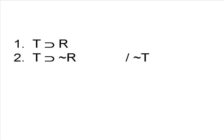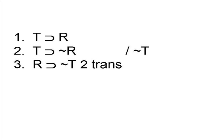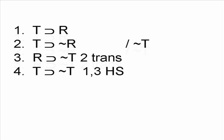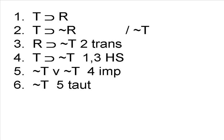Sometimes you might have to experiment with a few steps and see if they generate any ideas. Trying transposition on line 2 yields R implies the negation of T. Now look at lines 1 and 3 — we can use hypothetical syllogism to put these together, since they share the common term R. So we get the strange line T implies the negation of T. Using the rule of implication, we turn that conditional into the disjunction not T or not T. By tautology, this is simply equivalent to not T, thus proving the argument valid.